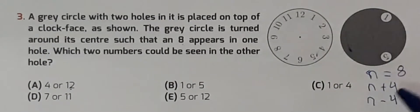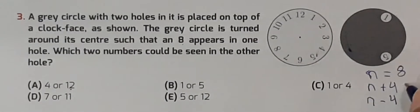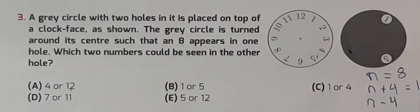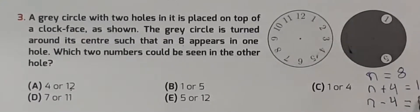Now 8 plus 4 - the distance is 4. So 8 plus 4 equals 8, 9, 10, 11, 12. And 8 minus 4 equals 8, 7, 6, 5, 4.